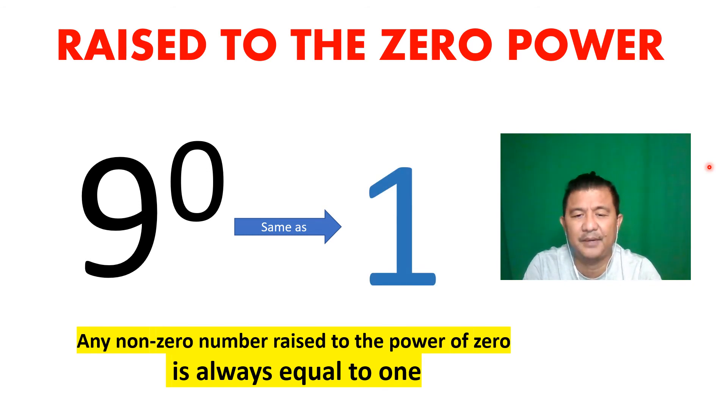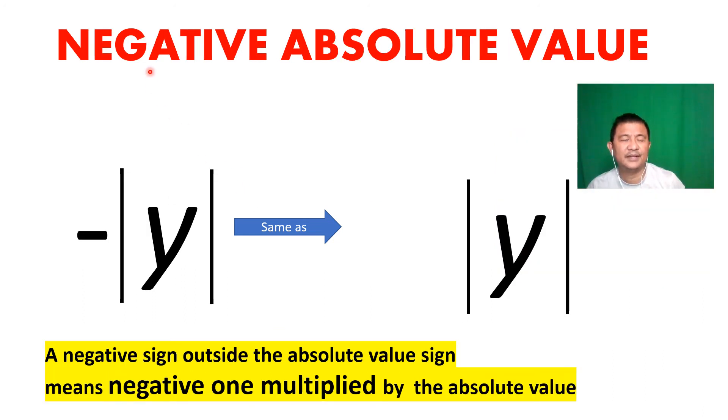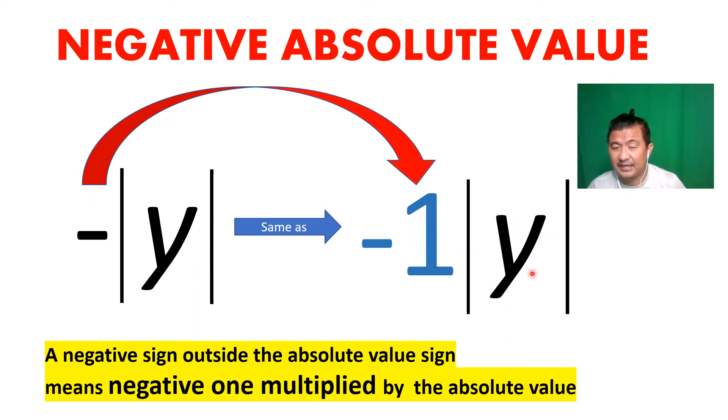Next, a negative absolute value. There's an absolute value, but I know absolute value cannot be negative. Why is there a negative there? What is the meaning of that negative? It actually means times a negative one. Whatever your absolute value is, multiply it by a negative one.